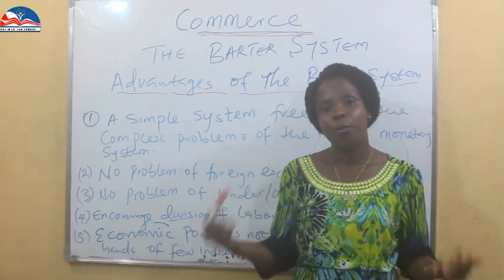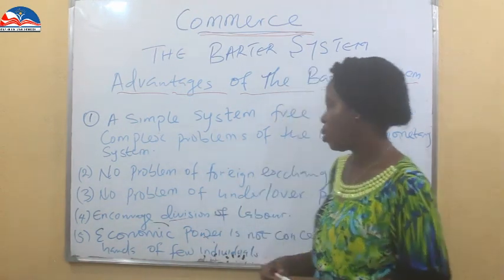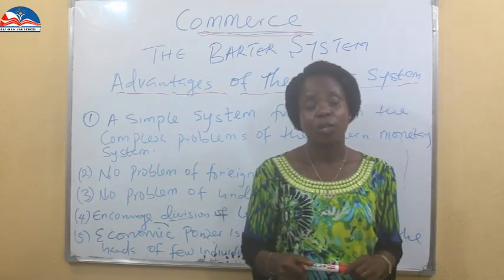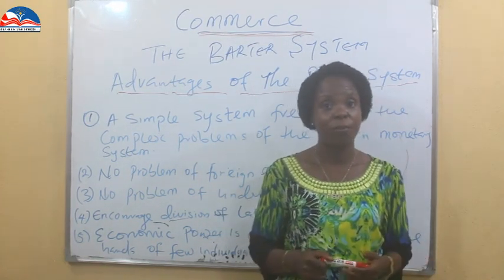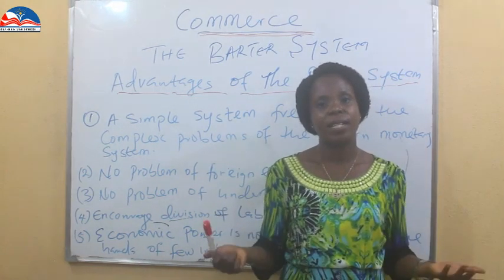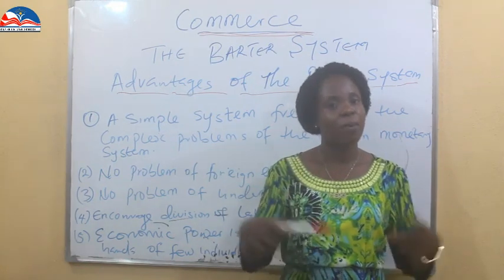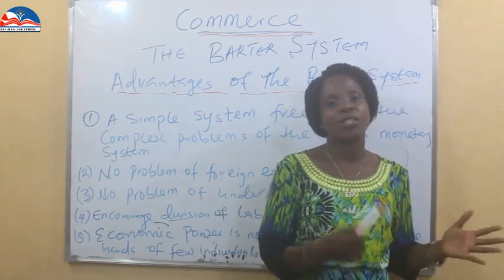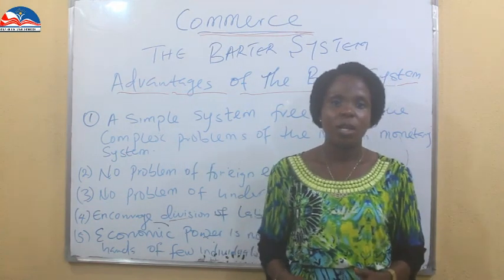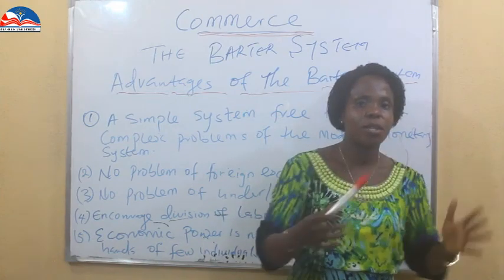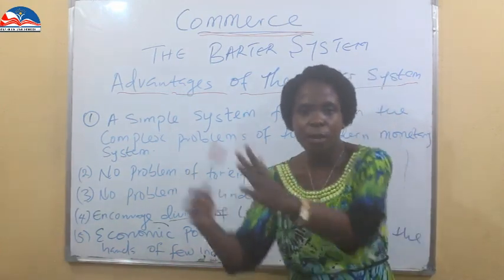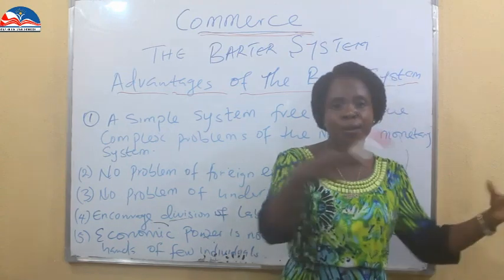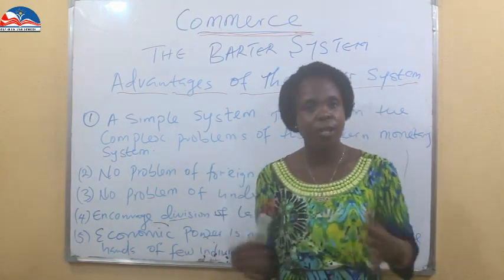The fourth advantage: the barter system encourages division of labor. Initially, people were producing for themselves and their immediate family. A time comes when one person cannot produce everything they need, so others produce different things that can be exchanged. This person produces rice, the other one produces yam, another produces coffee, another produces cassava — people were handling different activities and different farming, so division of labor is encouraged.